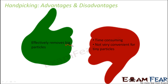However, the disadvantage is that it can only handle big particles. For tiny particles — like a powdery substance such as salt mixed in a mixture — you cannot hand pick them because you cannot even locate where those particles are. So hand picking doesn't work for tiny particles. It is also very time-consuming, so it is helpful only when the particles to be separated are comparatively bigger in size and smaller in quantity.